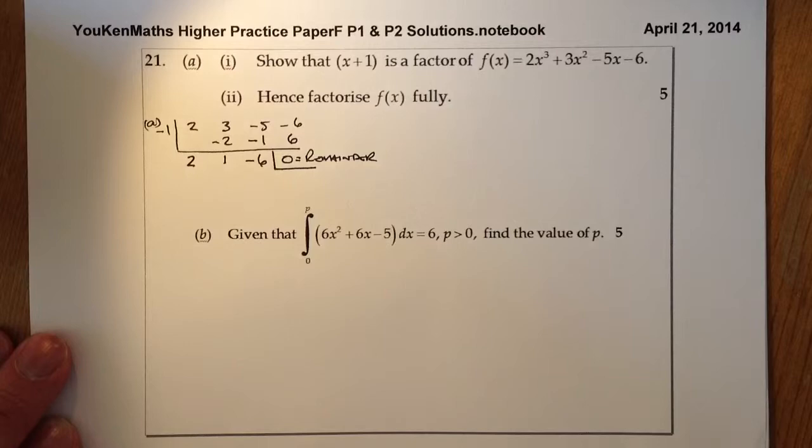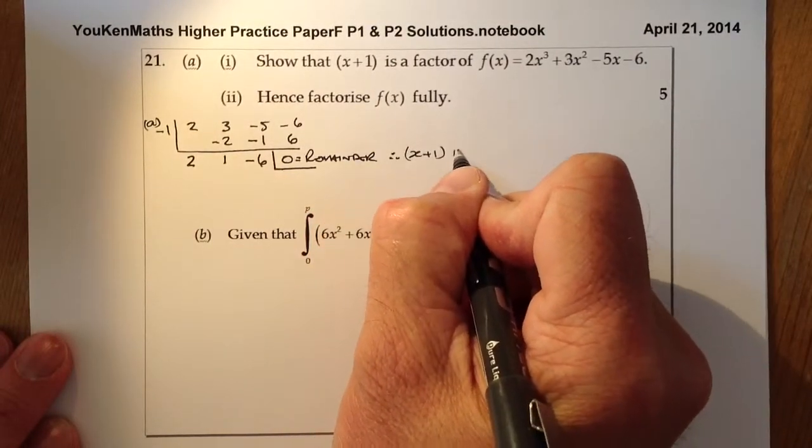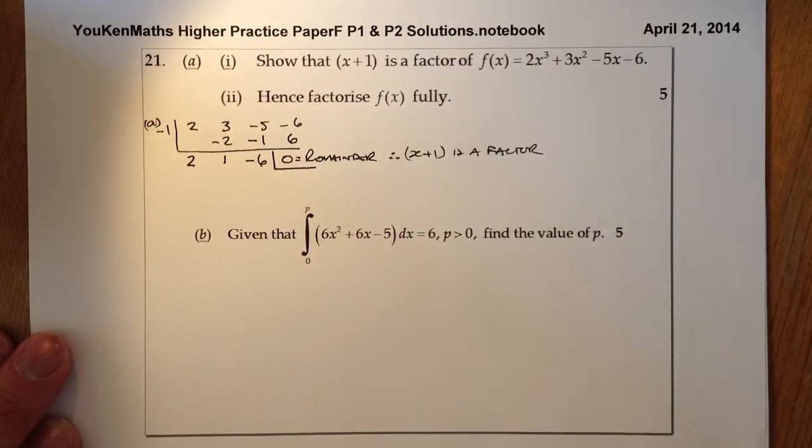So if the remainder equals 0, I can say therefore x + 1 is a factor. That's part 1 complete.